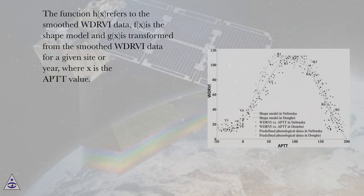The function h(X) refers to the smooth WDRVI data, f(X) is the shape model and g(X) is transformed from the smooth WDRVI data for a given site or year, where X is the APTT value.